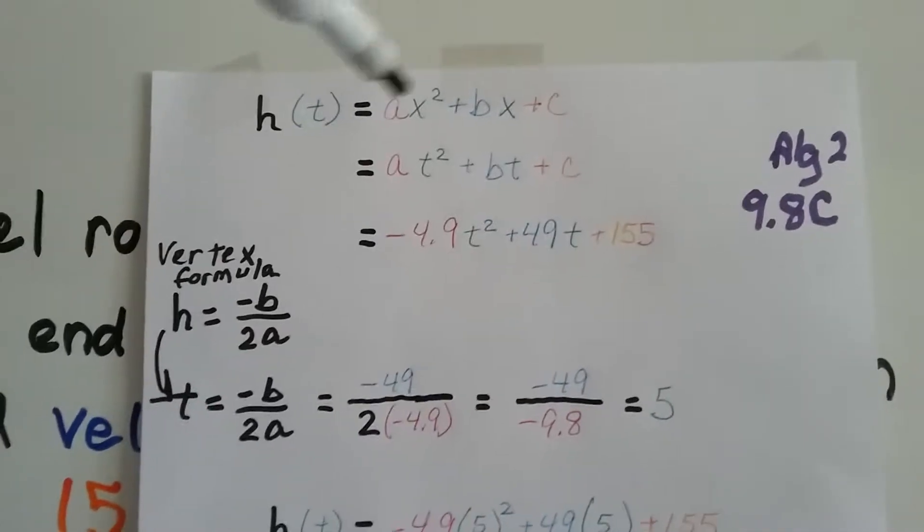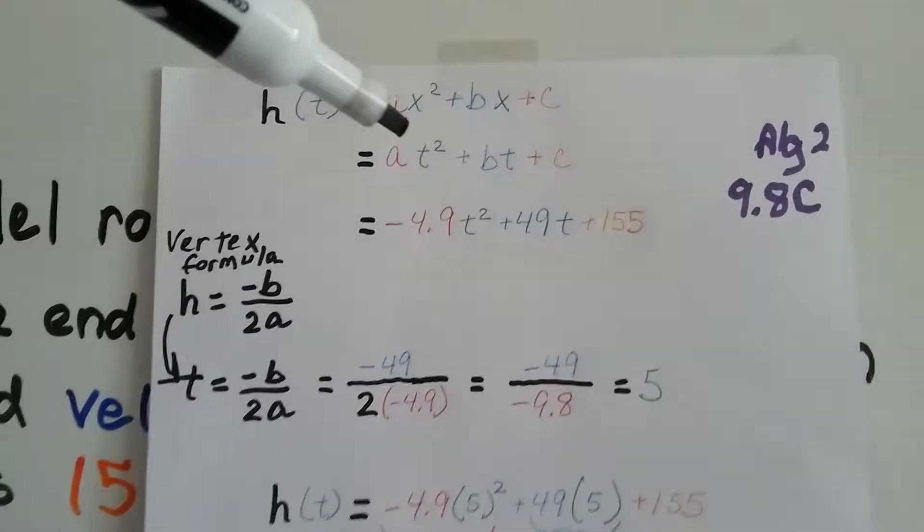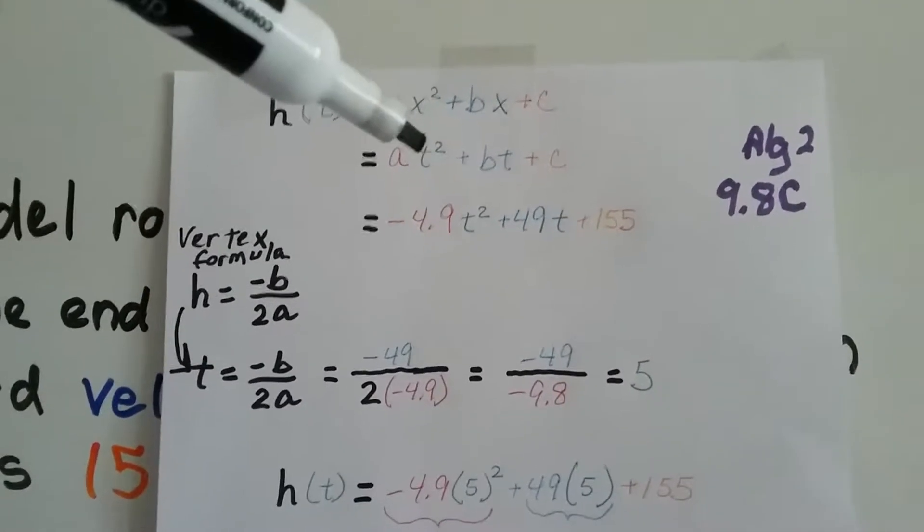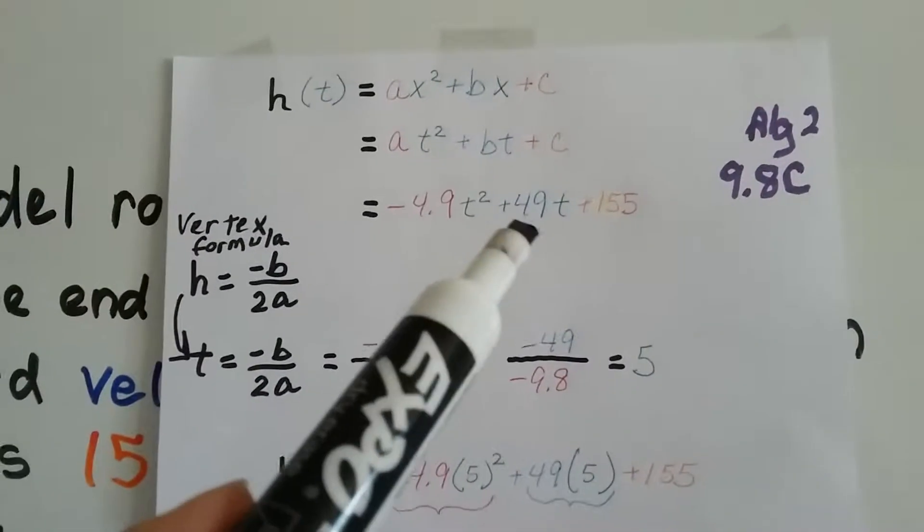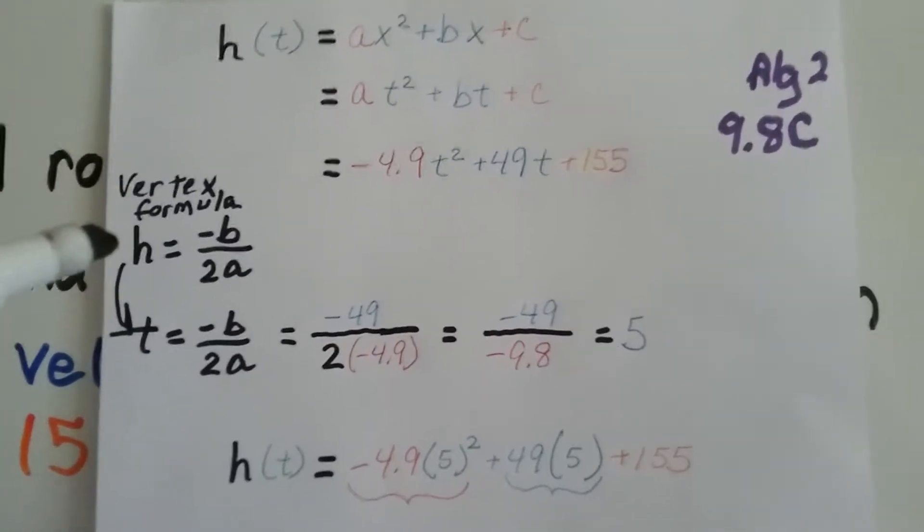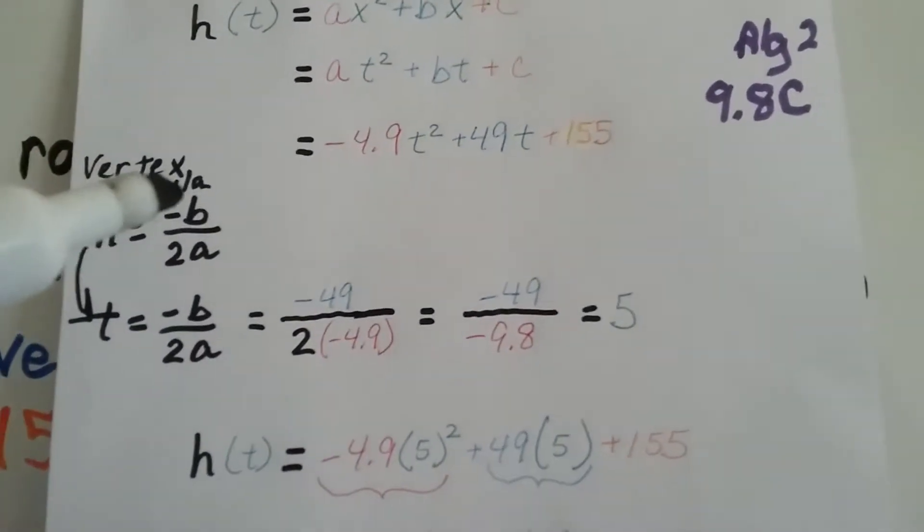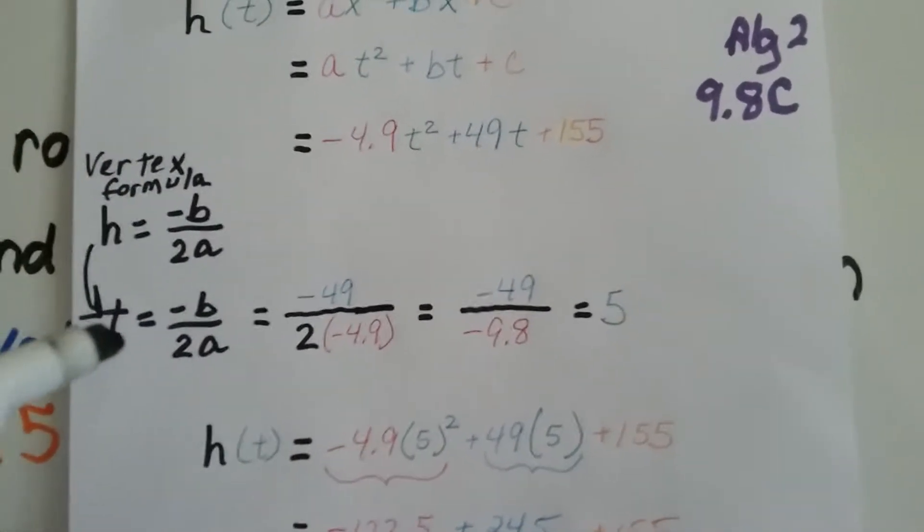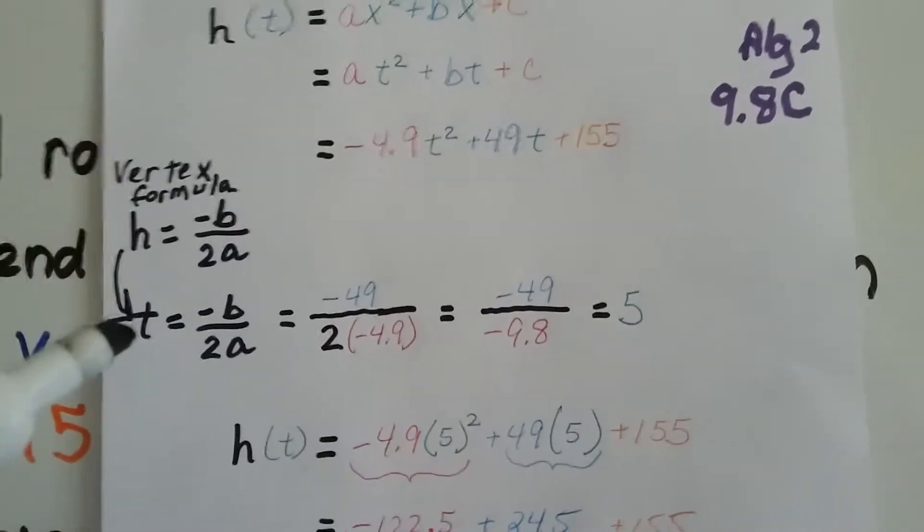We've got our quadratic equation, and we're going to use t instead of x. If we put in our 49 and our 155 here, it's going to look like this. We can use the vertex formula that h equals negative b divided by 2a, except we're going to do it for t, because we're going to solve it for t.